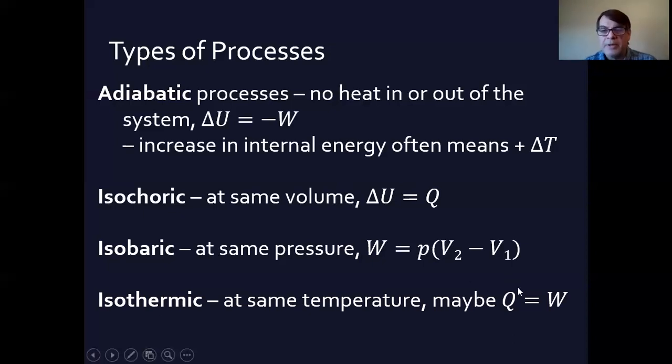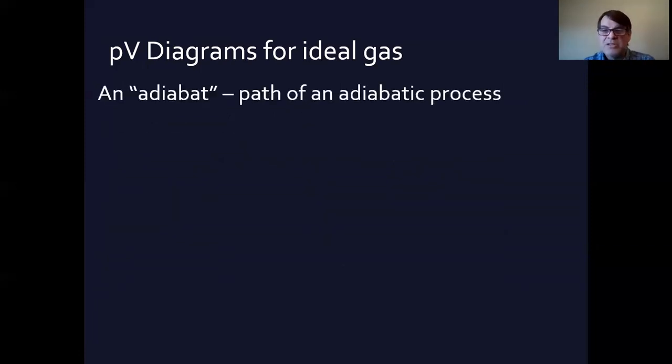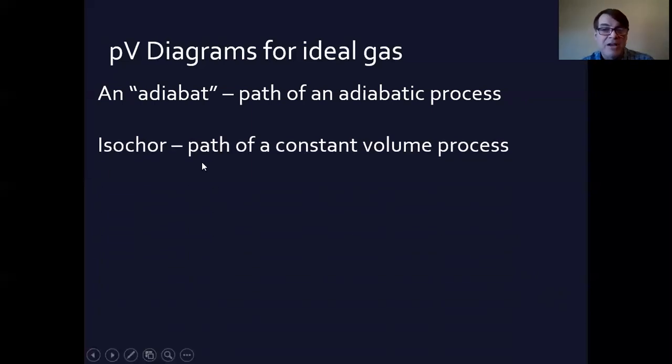Okay, so isothermic. All right, so the rest of that section has to do with PV diagrams. Remember that the P is the vertical and the V, the volume, is the horizontal. And so there are some terms here that are very predictable. So an adiabat is a curve that relates to an adiabatic process. Surprise! An isochore is the path of an isochoric process.